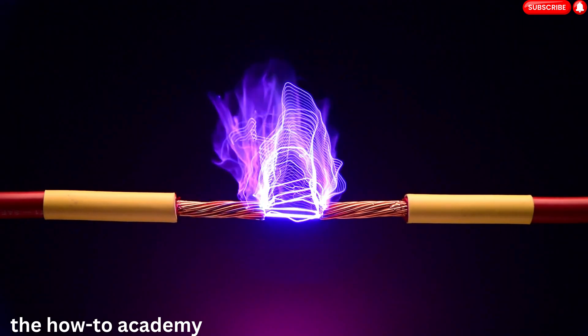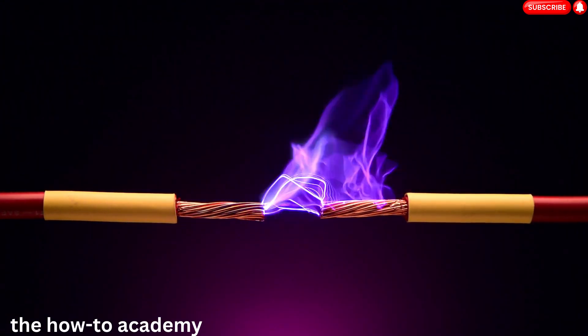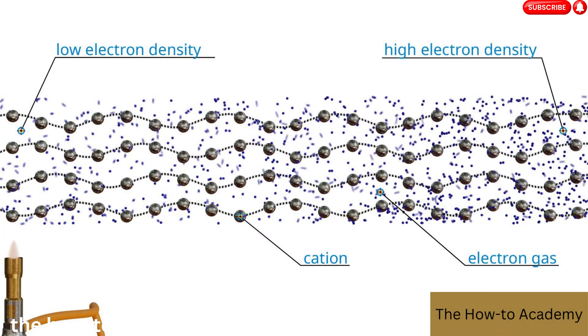In addition to this, electrons contribute significantly to the thermal conductivity of materials. In good conductors, the outer shell electrons are loosely bound and can move freely. When heat is applied, these free electrons absorb the energy and start moving faster, colliding with other electrons and atoms, thereby spreading the heat.